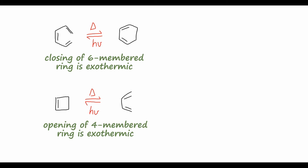If we'd like to draw the mechanisms for these reactions, they're quite straightforward. For the hexatriene starting material, drawn in a cyclic arrangement, upon heating the pi bonds all shift: the top pi bond migrates over, the pi bond on the left swings down, and the third pi bond comes up to form a sigma bond between the two carbons on the right, closing the ring and forming the cyclohexadiene product.